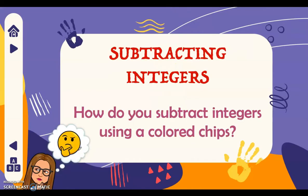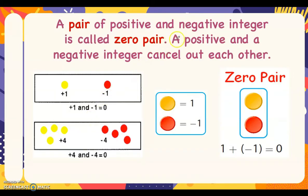Next is subtracting integers using colored chips. We represent positive numbers with yellow chips or yellow circles, and negative numbers with red chips or red circles. Going back to our lesson about zero pairs: a pair of a positive and negative integer is called a zero pair, and they cancel each other out. So positive 1 plus negative 1 equals zero, and 4 plus negative 4 forms 4 zero pairs, all equal to zero.